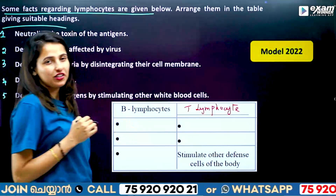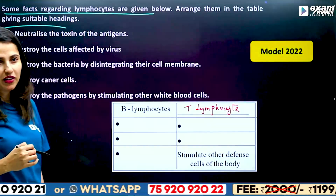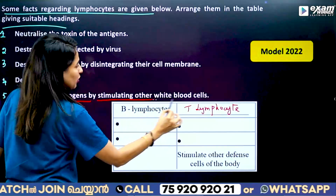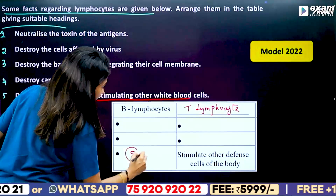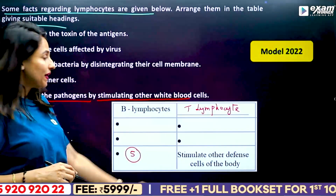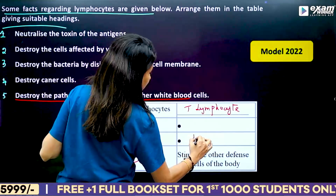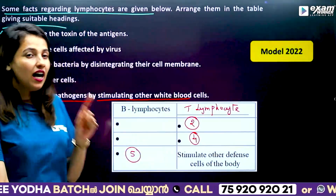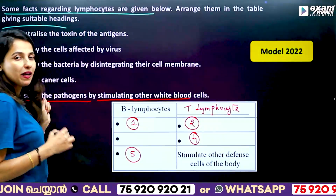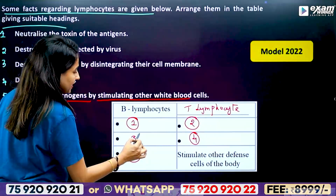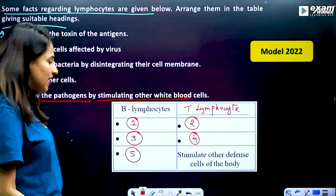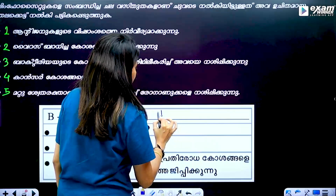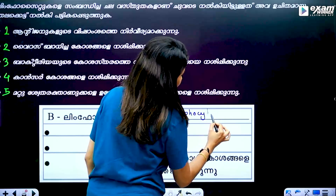If you have two different types, there is a common function. B lymphocyte: destroys pathogens by stimulating other white blood cells, produces antibodies, neutralizes toxins, and disintegrates the bacterial cell membrane. T lymphocyte: destroys cancer cells and virus-affected cells.